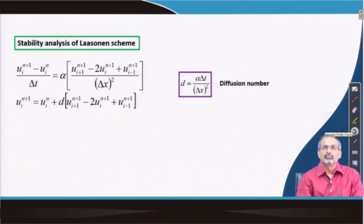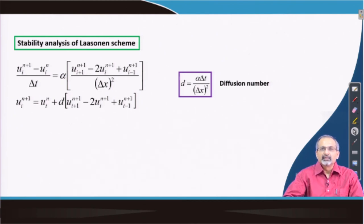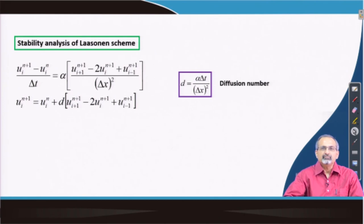Looking ahead, there are other schemes for discretizing parabolic PDEs that can be even better than the Lassonen scheme in certain respects — for example, by improving the order of accuracy while maintaining unconditional stability. There are also schemes that provide an advantage over explicit schemes when applied to multi-dimensional problems, with no severe restrictions on the choice of time steps. These will be discussed in later lectures. Thank you.